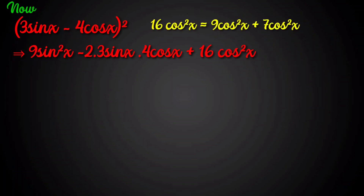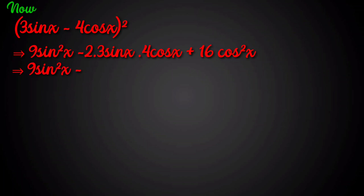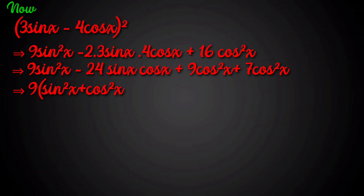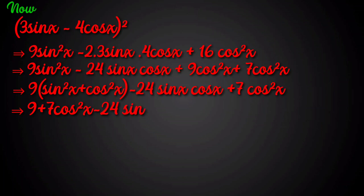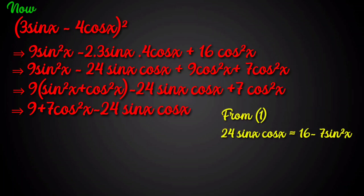Since 16cos²(x) = 9cos²(x) + 7cos²(x), we can write: 9sin²(x) - 24sin(x)cos(x) + 9cos²(x) + 7cos²(x). This implies 9(sin²(x) + cos²(x)) - 24sin(x)cos(x) + 7cos²(x). Since sin²(x) + cos²(x) = 1, this becomes 9 + 7cos²(x) - 24sin(x)cos(x).